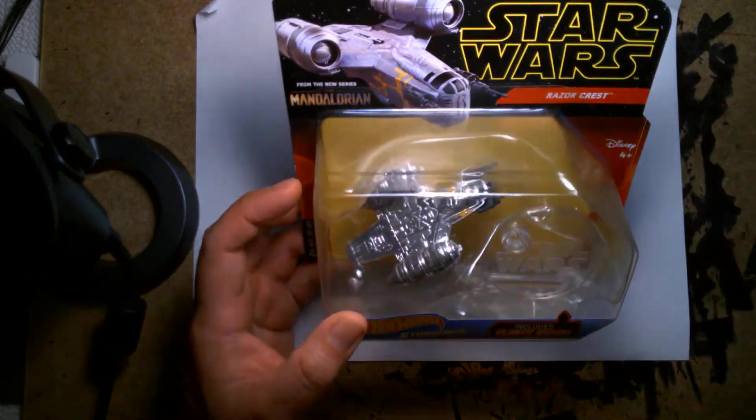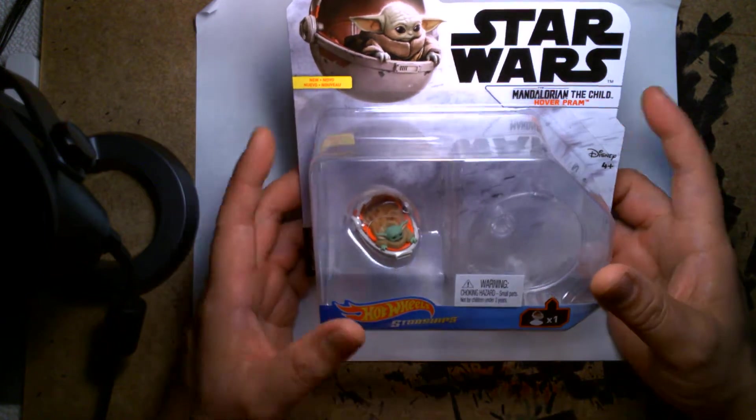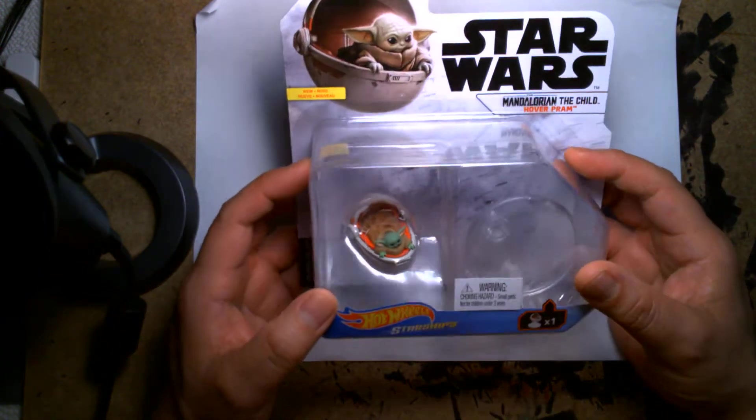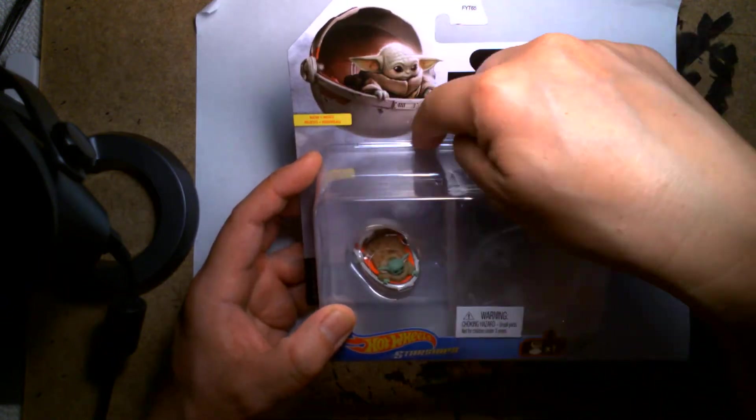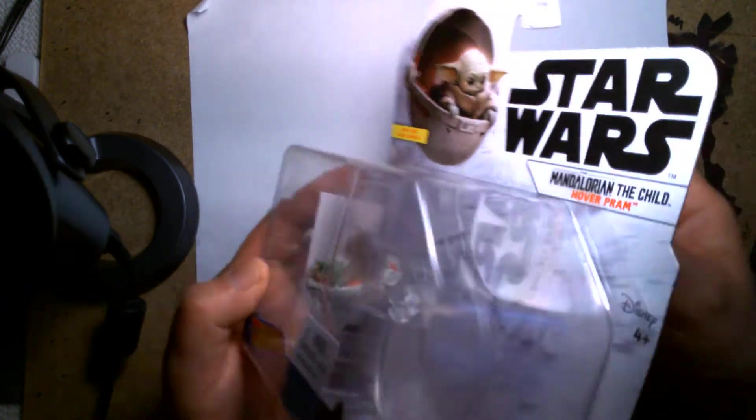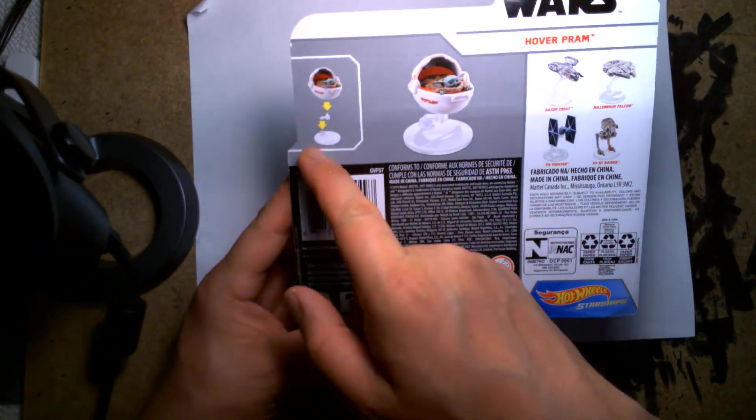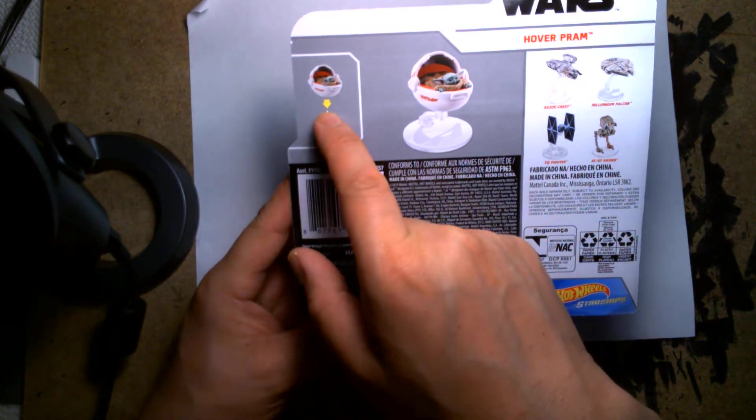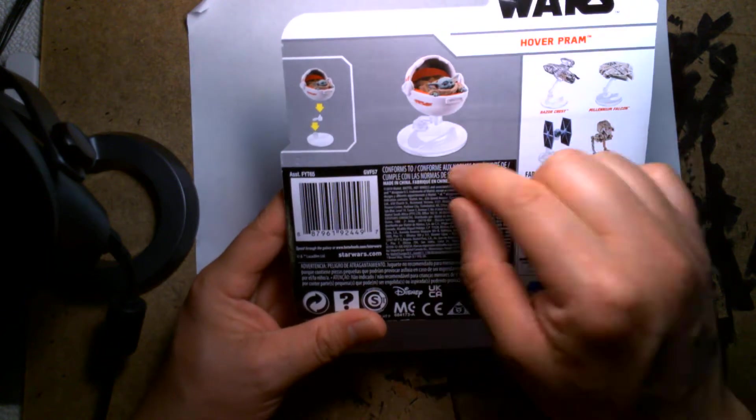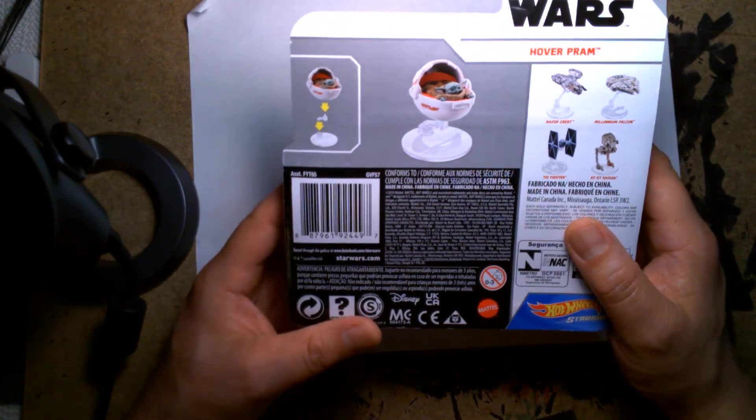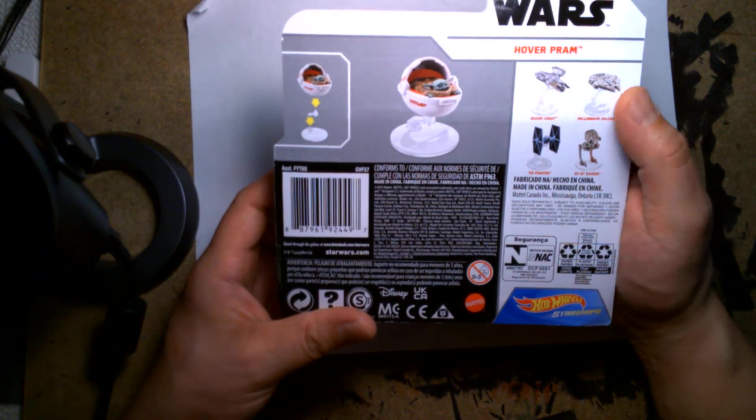Let's get to Baby Yoda, or Grogu, or the Child, or whatever you want to call him. Here he is, the Child. Love the package, love the card, I love this illustration. On the back, simple instructions - his stand is comprised of two pieces, there's the base and the post, and you plug them in and then you throw the hover pram on top. What falls in this line: there's the Razor Crest, the Falcon, the TIE Fighter, and the AT-ST Raider.